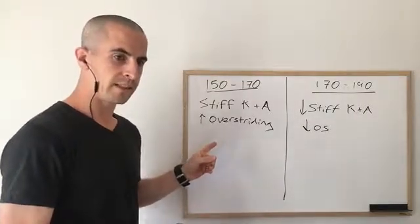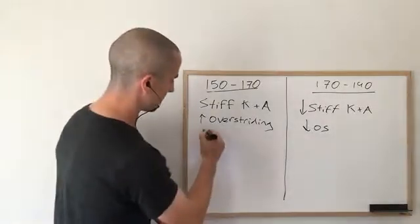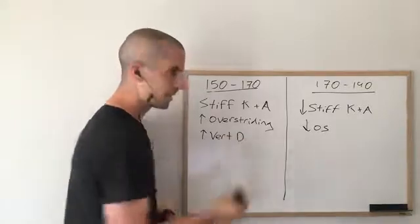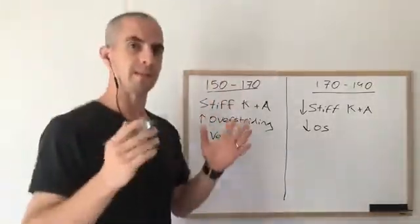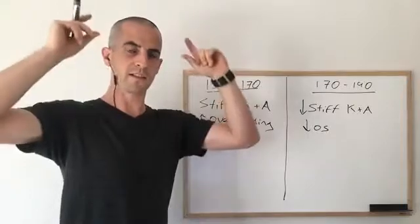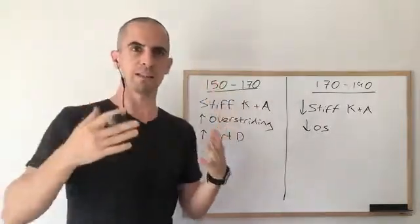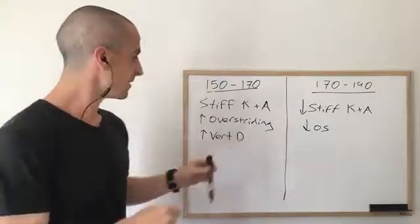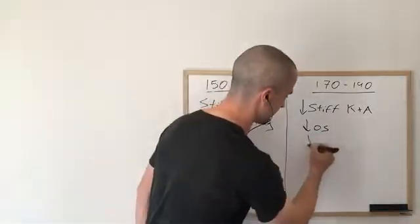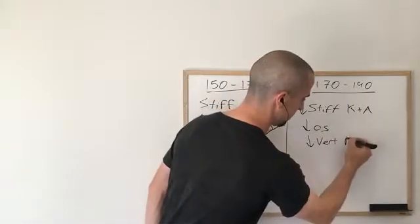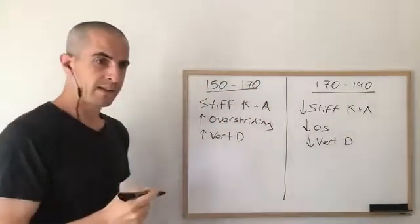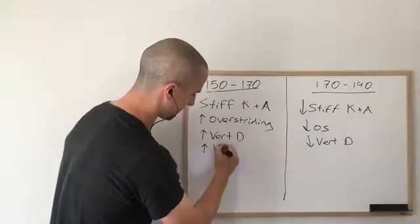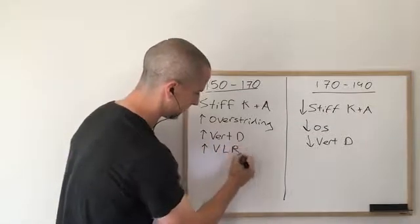At the lower cadence, we also see increased vertical displacement — that's bouncing up and down too high. The vertical oscillation — if you imagine seeing a runner whose head is just moving up and down a lot — that's increased vertical displacement. In contrast, at the higher cadence side, we see reduced vertical displacement.